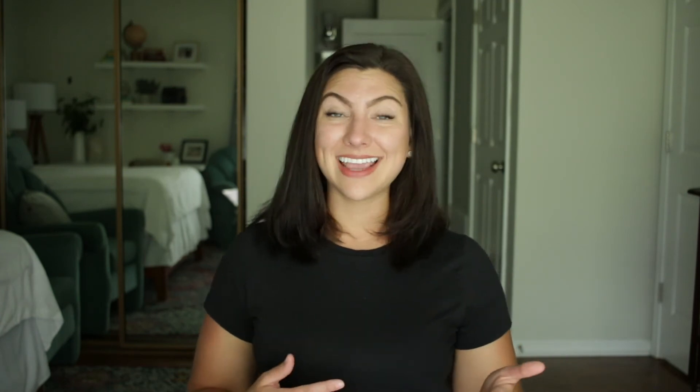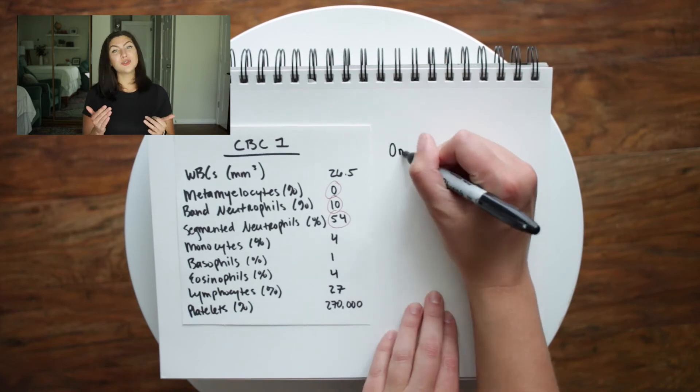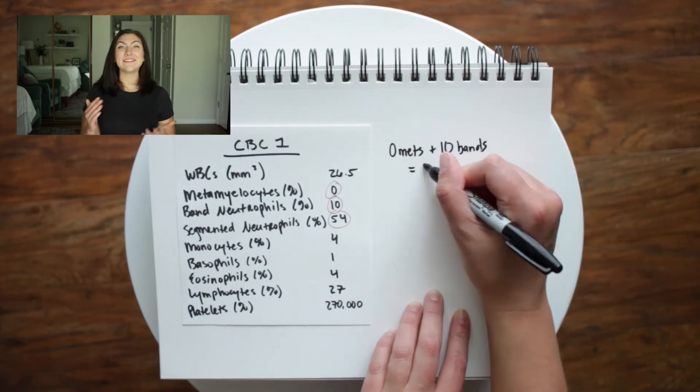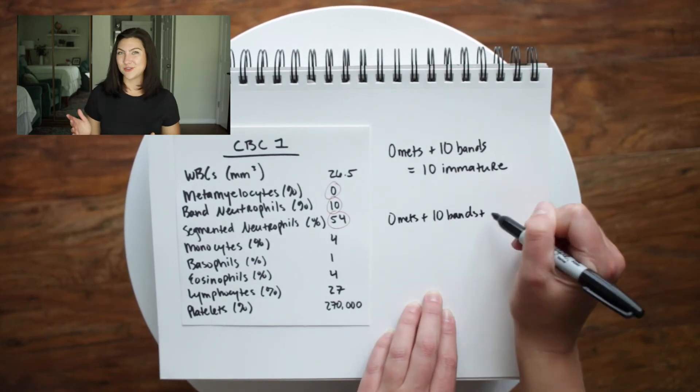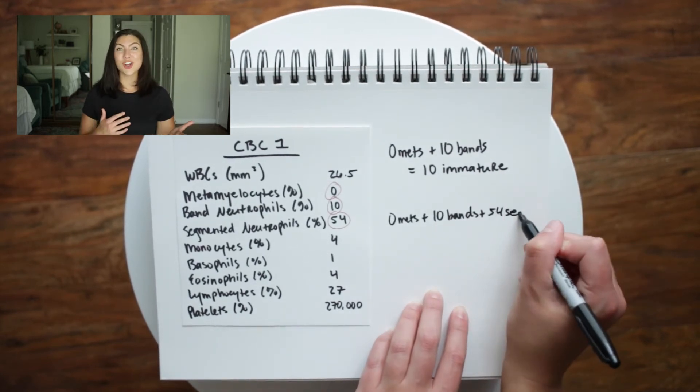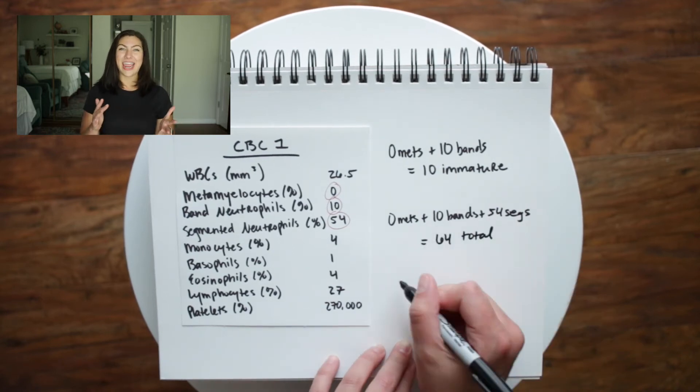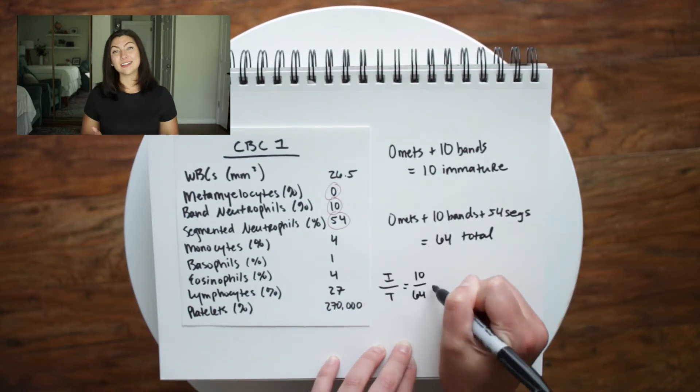Let's look at our first example. If we add together the amount of metamyelocytes and bands to total our immature neutrophils, and then divide that over our metamyelocytes, our bands, and our segmented neutrophils — which are the mature form — we add those together and divide out and we see that our answer is 0.15. I'm not a physician and I don't have the full clinical picture of this patient, but this is a much lower suspicion for sepsis than an I to T ratio of greater than 0.4 or certainly greater than 0.8.